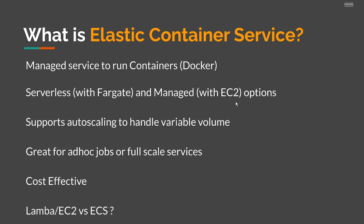Briefly comparing ECS to Lambda and EC2: with Lambda, you're worrying about basically just code — it's serverless, so no infrastructure concerns. With EC2, you have to worry about deploying your code to the machines and running scripts to spin up your processes. With ECS, it's kind of a middle ground between Lambda and EC2. You don't have to worry about as much infrastructure as with EC2, but you get the advantages of containerization in combination with Docker.